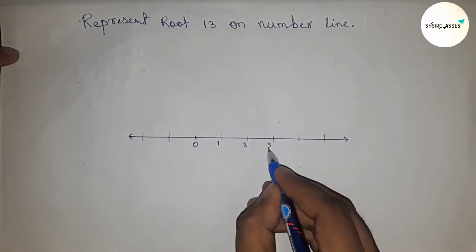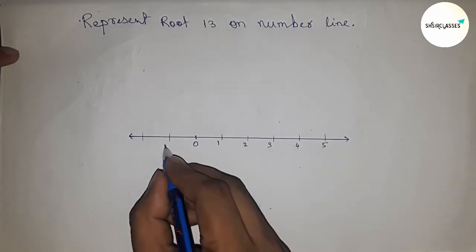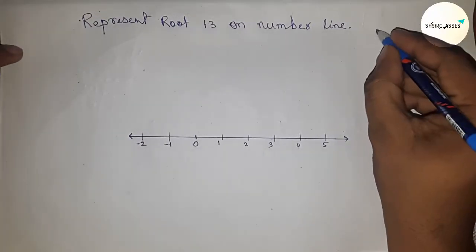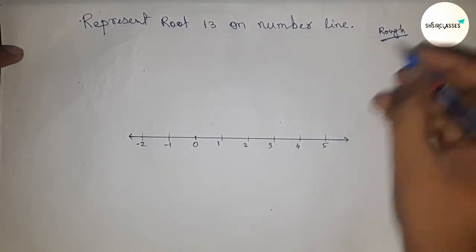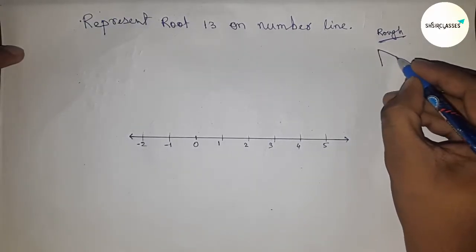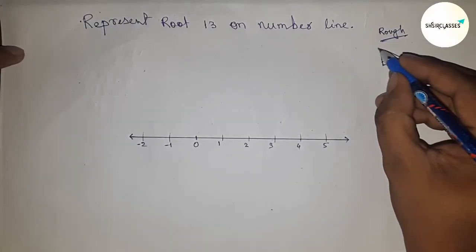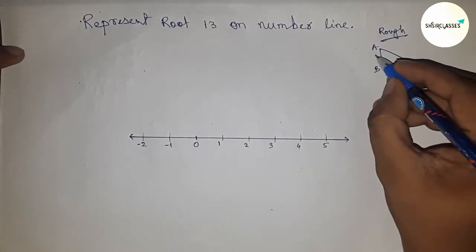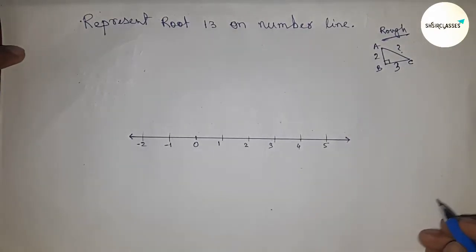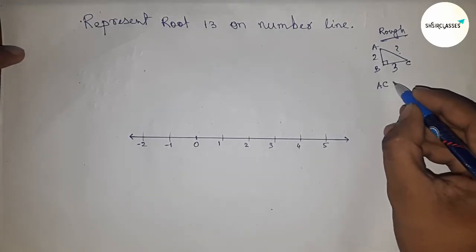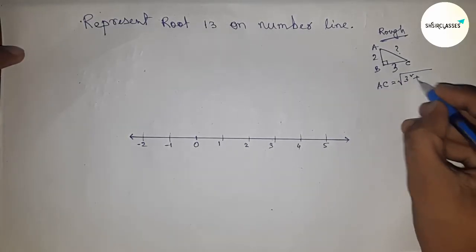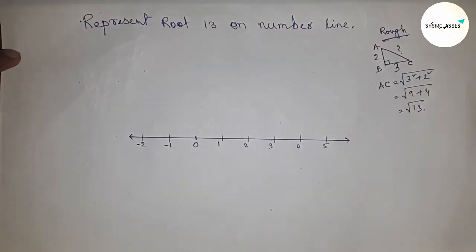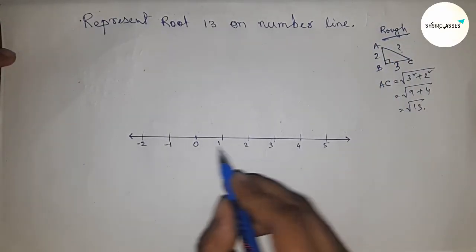So this is 1, 2, 3, 4, 5, and this side is -1, -2. Now discussing the concept of root 13: if there is a right angle triangle with base 3 and height 2, then what is the hypotenuse? By applying Pythagorean theorem, hypotenuse squared equals base squared plus height squared, so the hypotenuse is root 13.